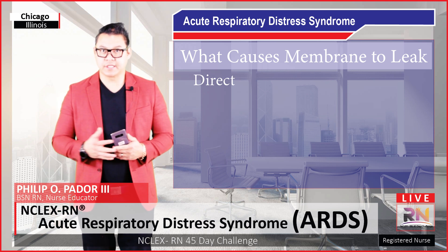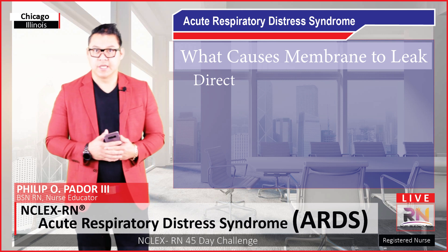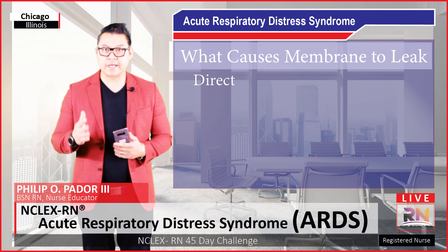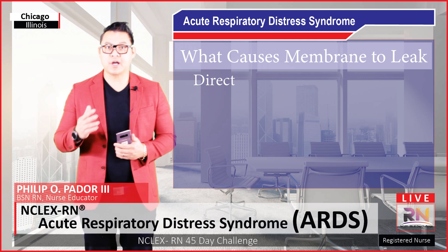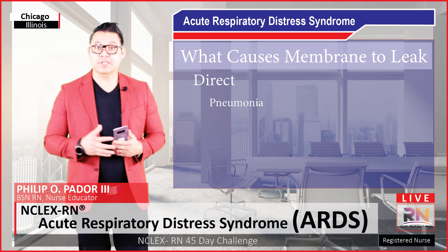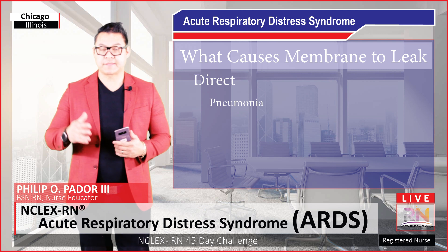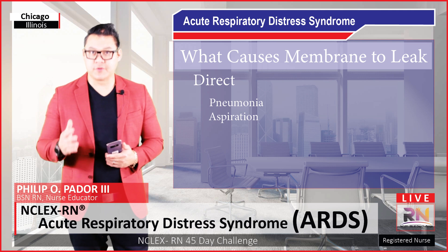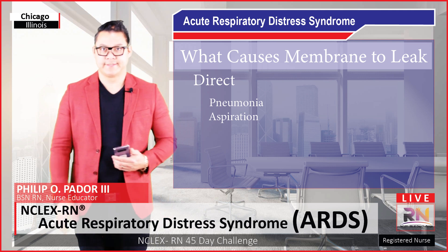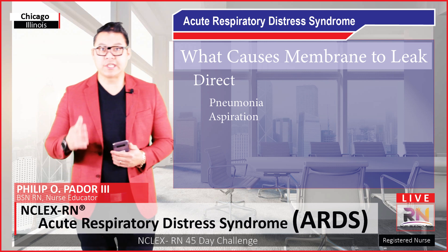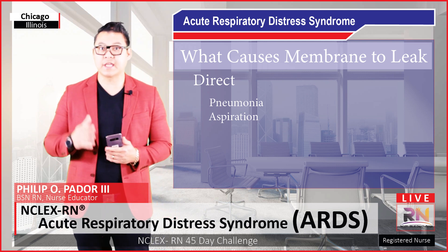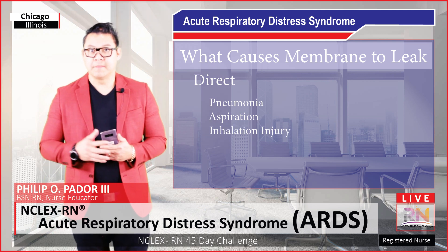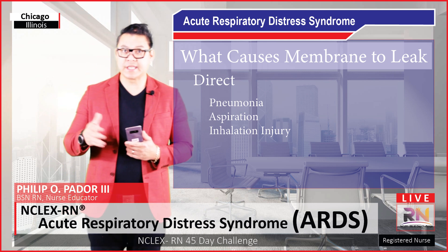Another way a person can develop ARDS is through direct causes — the source is the lungs — directly damaging the capillary membrane. What can cause this is pneumonia; patients who get pneumonia can over time damage that membrane. Aspirations — a lot of patients who have difficulty swallowing can aspirate food. Gastric secretions, which we know digest, so if they get into our delicate lungs they can definitely damage the capillary membrane. Also, inhaling any toxic substances like smoke, powders, or anything like that that gets in there can damage the membrane.